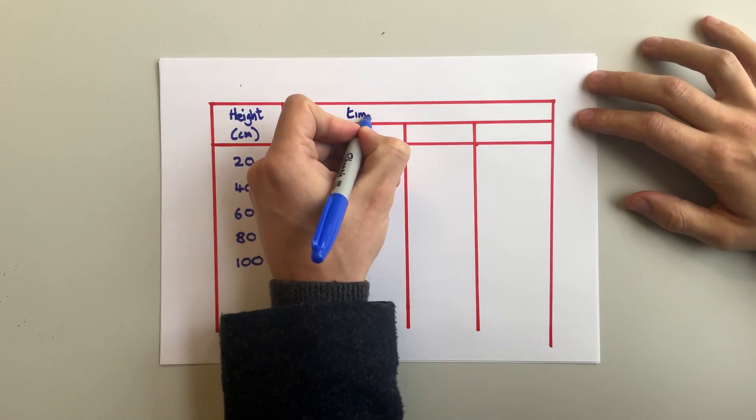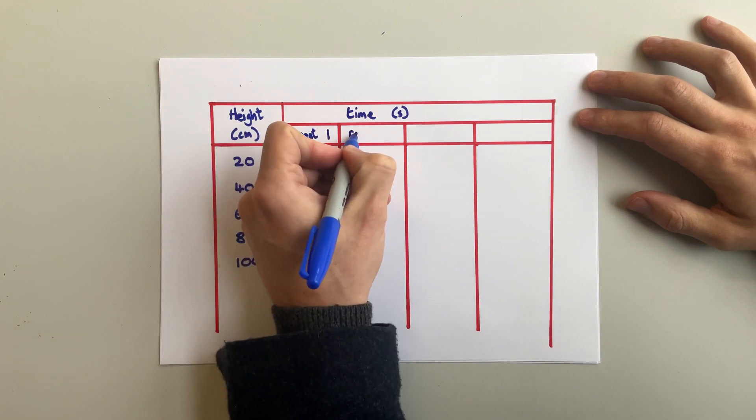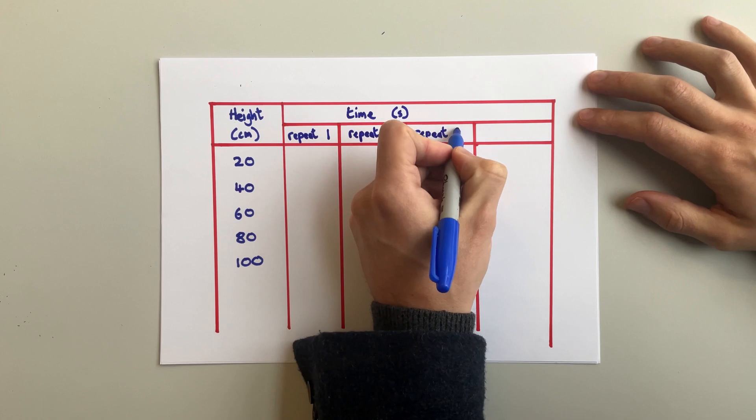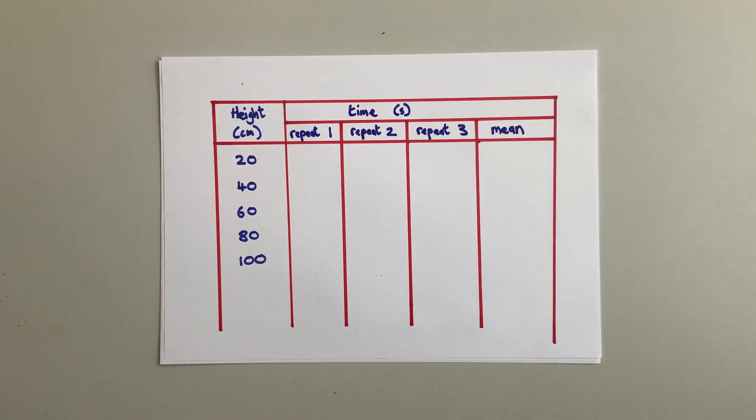And on the top half, write your dependent variable. So for our toy car experiment, that's the time, in seconds. The boxes underneath it are for your repeat readings and your mean value. And because they're all underneath the time box, it lets you know that they're all types of time.